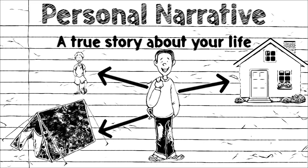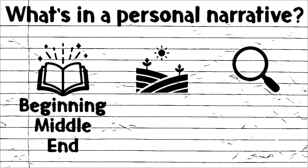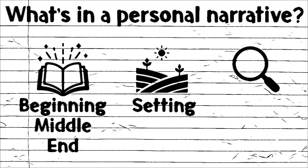So all three are great examples of a personal narrative. Now what is in a personal narrative? One thing is that a story has a beginning, middle, and end — and you've been writing stories like that since you've been in school, so this should be quite easy for you. Another important thing is the setting.